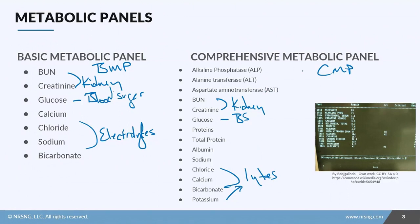The key difference is that the Comprehensive Metabolic Panel also looks at liver function — including Alkaline Phosphatase, ALT (Alanine Transferase), and AST. It additionally evaluates protein levels such as total protein and albumin.